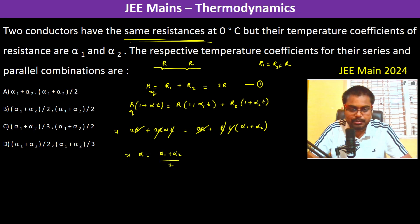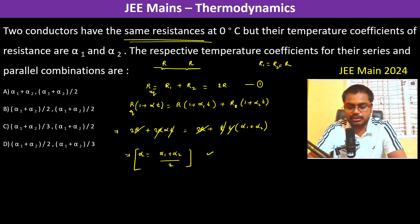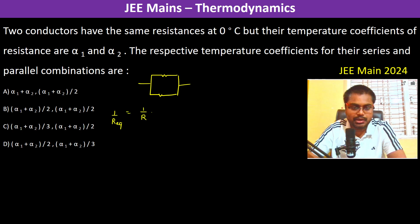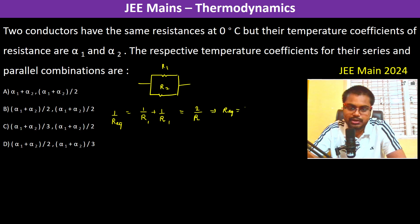When the resistors are connected in parallel, 1/R_eq = 1/R1 + 1/R2 = 1/R + 1/R = 2/R. Since both R1 and R2 have the same magnitude R, R_eq = R/2. This is the first equation.